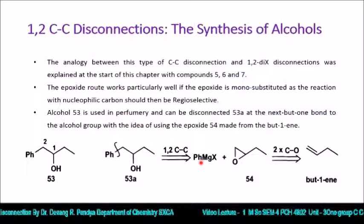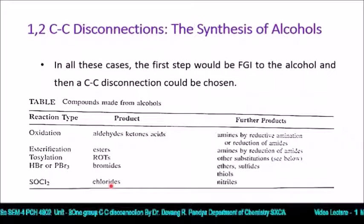A Grignard or organolithium reagent attacks at the less hindered end of the epoxide; the Grignard route gives alcohol 53. But-1-ene is treated with a reagent to give epoxide, which is treated with phenyl organolithium or Grignard reagent to give the target molecule. In all these cases, the first step is FGI — functional group interconversion to the alcohol — then a CC disconnection is chosen. From the alcohol: oxidation gives aldehydes, ketones, or acids; reductive amination gives amines; esterification gives esters; tosylation or treatment with HBr or PBr₃ or thionyl chloride gives further products.